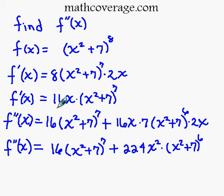and then we rewrite the first, 16x, and then take the derivative of x squared plus 7 raised to the 7th, which means we're going to take the 7, bring it out front, so there's our 7.